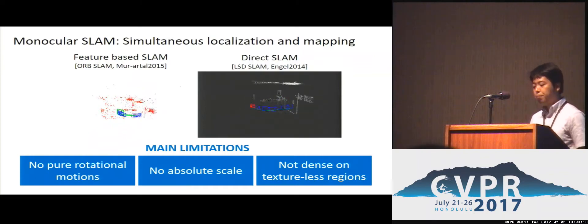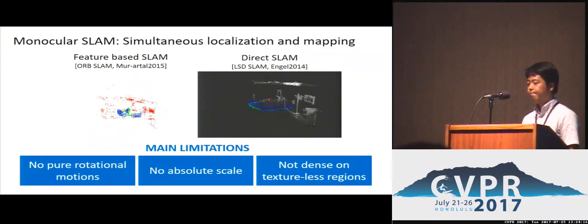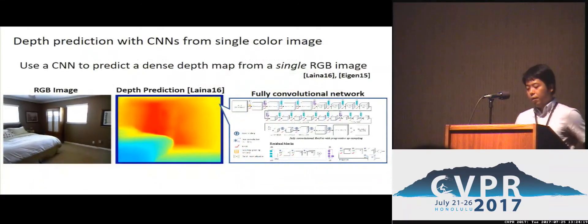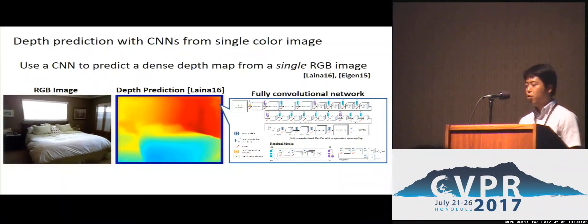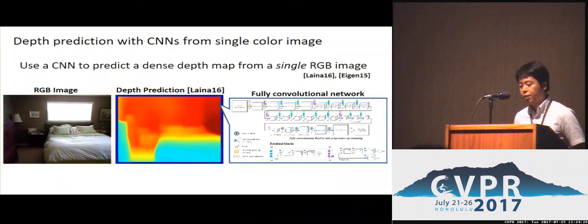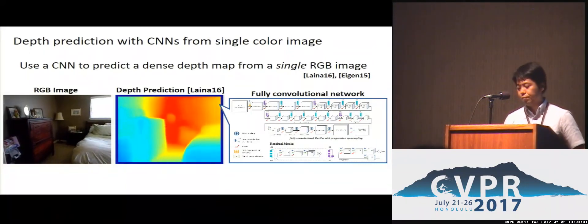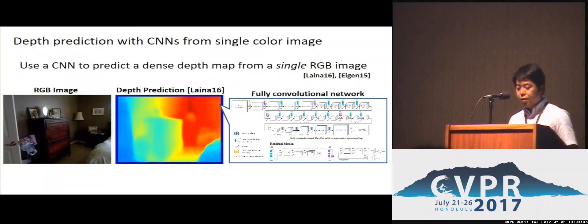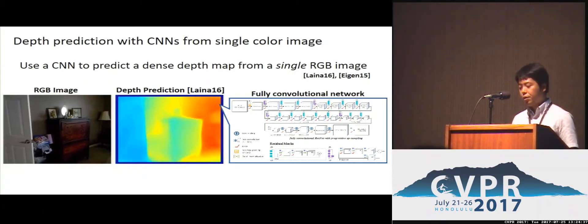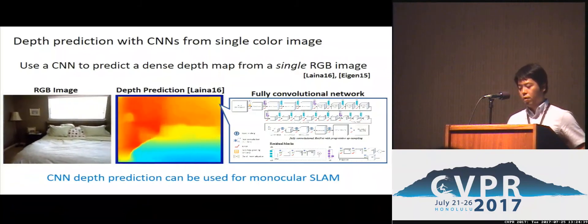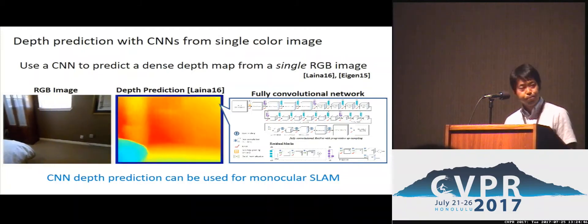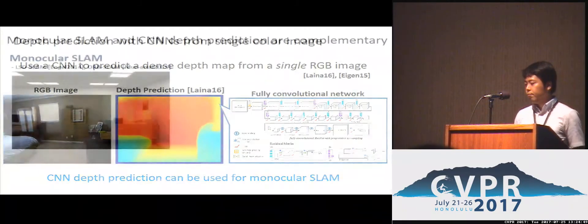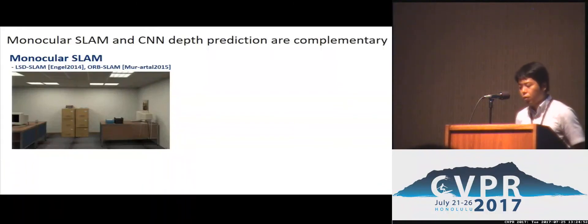This paper addresses such principal limitations in monocular SLAM. Recently, research on monocular depth prediction using deep convolutional neural networks has demonstrated high potential to predict a depth map from just a single image. A depth predictor can estimate a dense depth map without using any motion stereo, so depth prediction can be used for improving monocular SLAM. Interestingly, we found that monocular SLAM and CNN depth prediction are complementary.